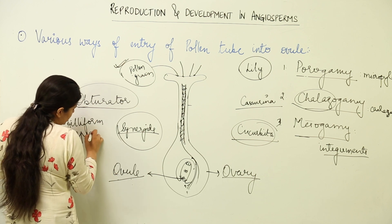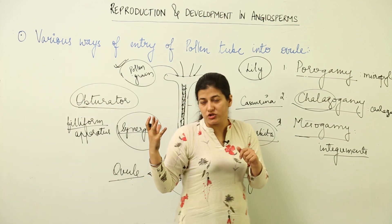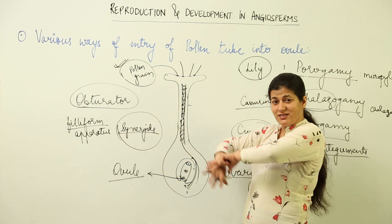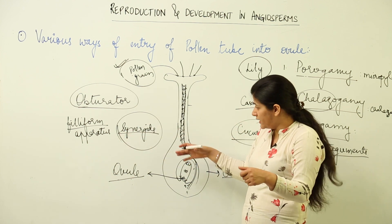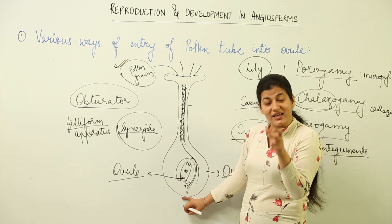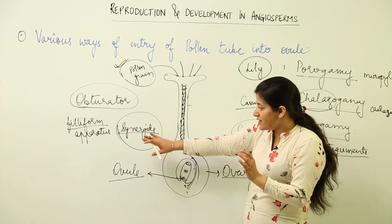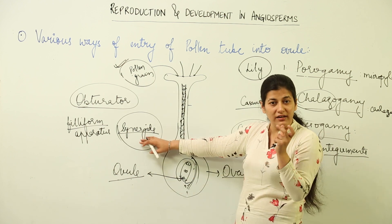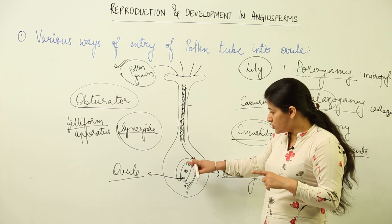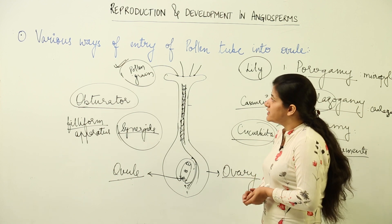Filiform apparatus that lies in the synergids. What is filiform? Finger-like projections are there inside the synergids. With the help of filiform apparatus, these synergids are burst apart and the pollen grain containing the male gamete reaches here to make sure that synergids dissolve and the male gamete. First one comes in contact with the egg, the second male gamete would go to the polar nuclei.